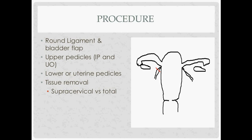Then cut the round ligaments and make the bladder flap by cutting the vesicouterine peritoneum. There's an avascular space between the bladder and the uterus — dissect through there and push the bladder down and out of the way.